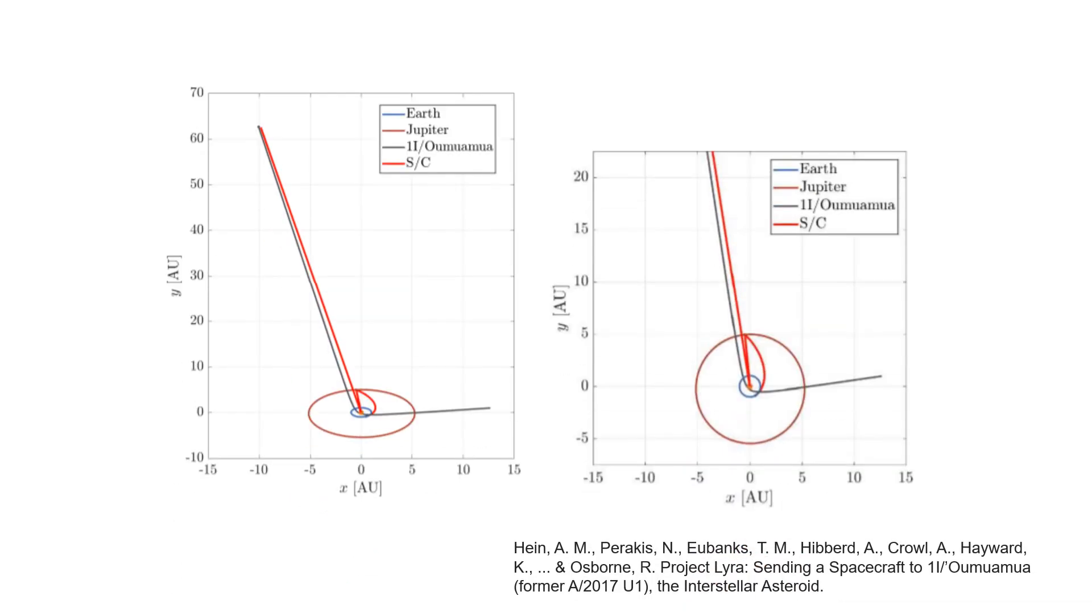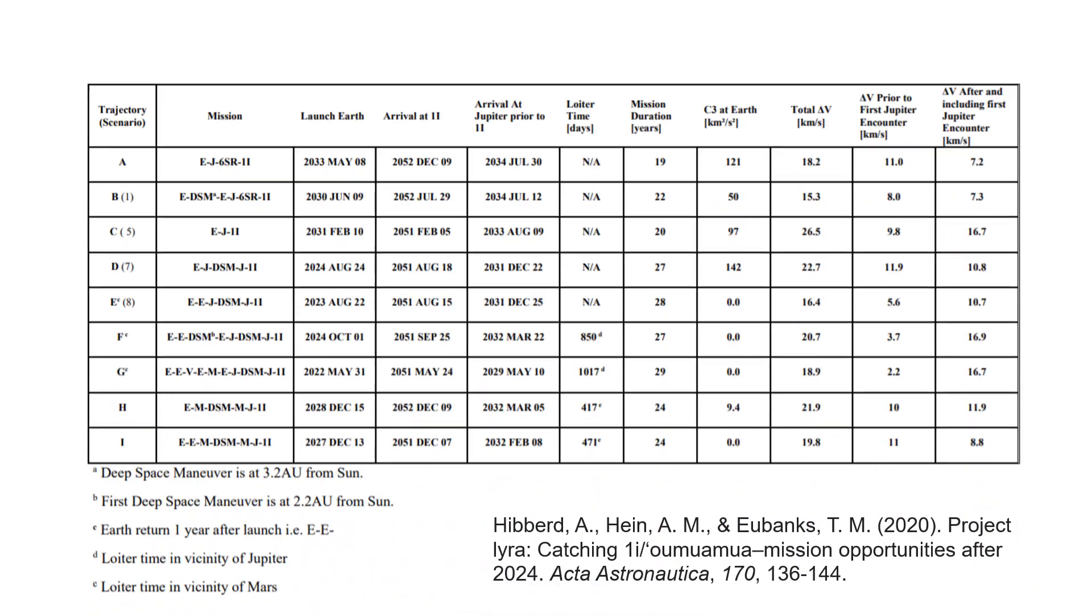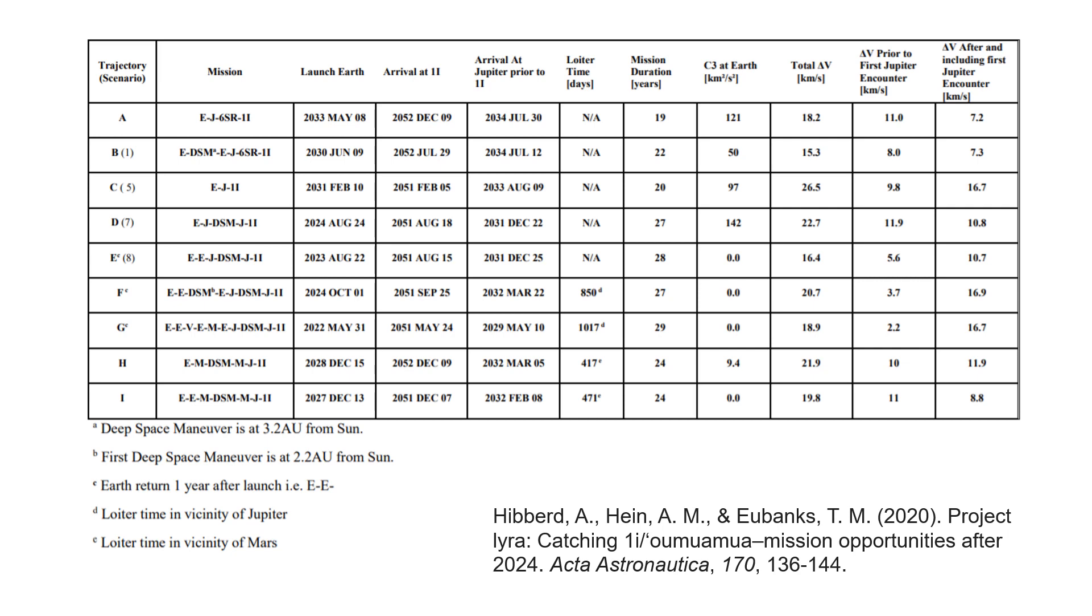In a number of publications, we analyzed a variety of mission and trajectory scenarios to Oumuamua, such as this one where the spacecraft is initially launched to Jupiter. Jupiter brakes the spacecraft and subsequently the spacecraft drops into the Sun and performs the solar orbit maneuver. Our team member Adam Hibberd came up with dozens of different solutions for trajectories to Oumuamua.